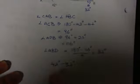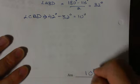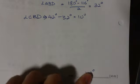So what do I do? I take 42 degrees minus 32 degrees equals 10 degrees. I forgot to label angle CBD. And that's my answer, 10 degrees. Don't forget you need a measurement.